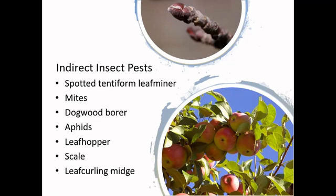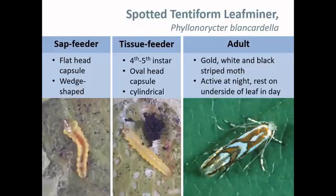The following presentation will look at the indirect insect pests present in Ontario apple orchards, including spotted tentiform leaf miner, mites, dogwood borer, aphids, leafhopper, scale, and leaf curling midge. Activity of these pests varies depending on the species and can begin anywhere from bud break right up until harvest.